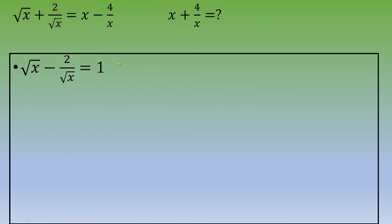So now what you can do is square both sides. This is square root of x minus 2 over square root of x squared equals 1 squared, which is 1.